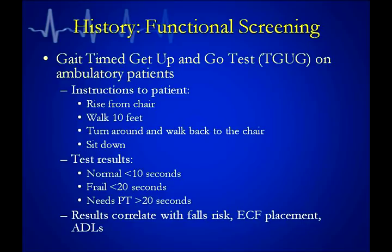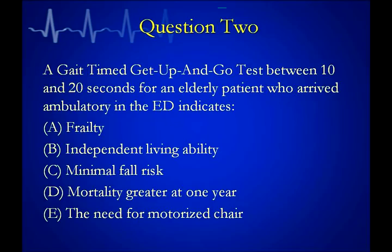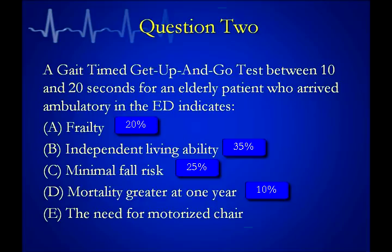The activities of daily living include the basics, the more advanced instrumental activities such as managing money and a checkbook, and advanced ADLs as well. Looking at the question statistics: 20% said A, 35% B, and the majority picked frailty as the problem. It looks like you've been exposed a little bit to gait time Get-Up-and-Go testing.